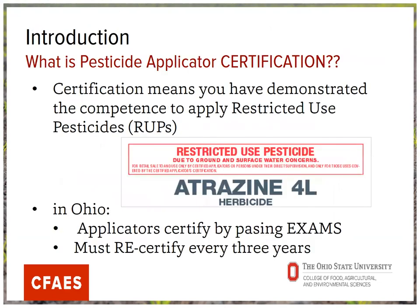Looking at that restricted use designation — that's actually a piece of a label — the EPA at the time of registration decides whether something is restricted use or not, usually due to toxicity or environmental hazard. So back to this question of certification: certification means that you have demonstrated a certain level of competence — in this case, enough competence to apply restricted use pesticides. In Ohio, how do you become certified to use restricted use pesticides? You do it by passing exams.